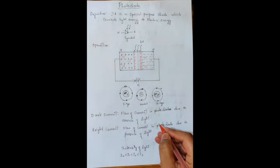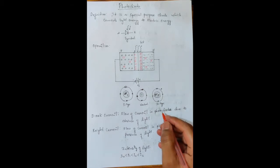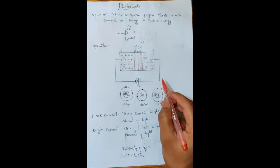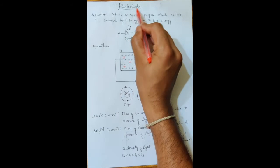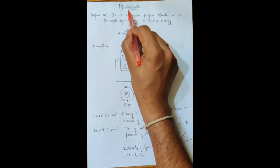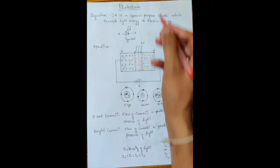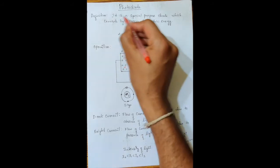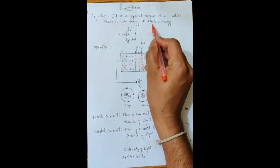Welcome to Learners of Electronics and Communication. In this lecture video we'll discuss special purpose diodes. First we'll discuss the photo diode. A photo diode is a special purpose diode — the name itself says it is a photo diode. Diode is nothing but the normal PN junction diode, and photo means light, so this diode converts light energy into electrical energy. The definition: it is a special purpose diode which converts light energy to electrical energy.